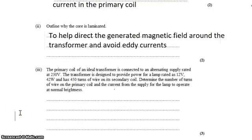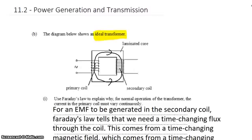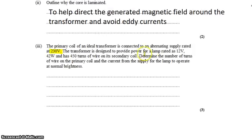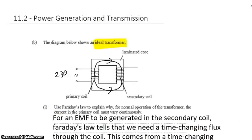Finally, we want to do a little calculation. The primary coil of the ideal transformer is connected to an alternating power supply rated at 230 volts. The transformer is designed to provide power for a lamp rated at 12 volts and 42 watts. And we want to get from those volts 42 watts of power.